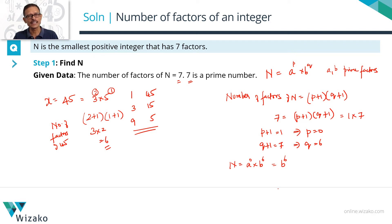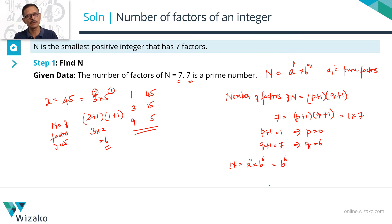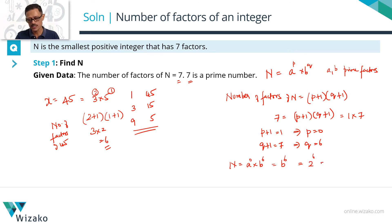We are trying to find the smallest N. Since N equals B to the power 6, if B is minimized then N will be minimized. The smallest prime number is 2, so the least value N can take — the smallest positive integer with 7 factors — is 2 to the power 6, which equals 64.